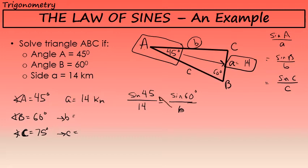This is a proportion which can be solved with cross multiplication. In this case, b times the sine of 45 equals 14 times the sine of 60. I'll isolate b by dividing both sides of the equation by the sine of 45, so side b equals 14 times the sine of 60 divided by the sine of 45.